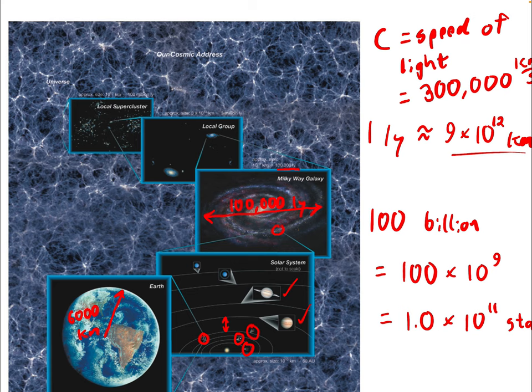Our spinning disk home galaxy, the Milky Way, is part of a local group of galaxies moving together gravitationally. On this scale we have about 3 million light years — 3 × 10⁶ light years — for the size of our local group. Galaxies group together, gravitationally attracted, essentially dancing and swirling around one another on timescales of hundreds of millions of years.